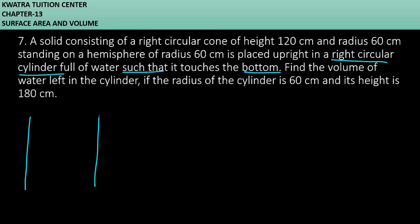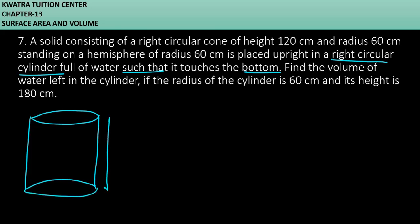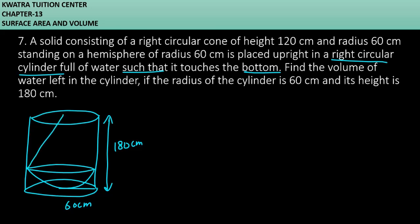The cylinder has a radius of 60 cm and height of 180 cm. Now, what is the situation inside? We have a hemisphere, and on the top of it, we have a cone. The cylinder is full of water.